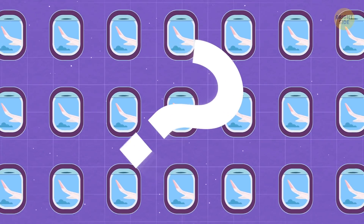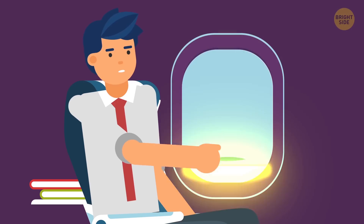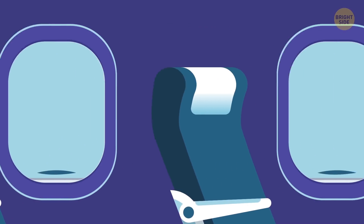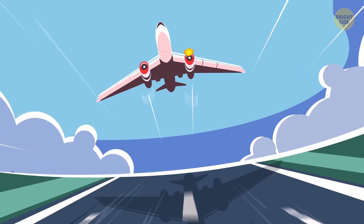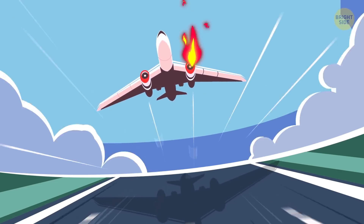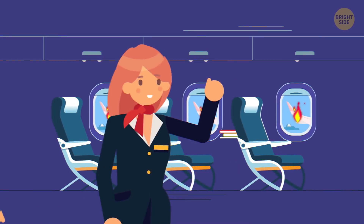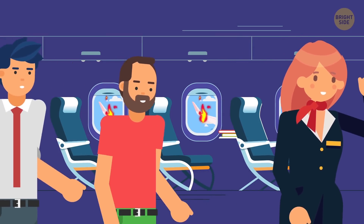But what about the shades? Why am I always told to keep my window shade up when the plane is taking off or landing? Well, turns out there are some serious safety reasons behind this too. When the shades are closed, flight attendants can't see what's happening outside. And since most accidents happen during takeoff and landing, it's critical that the cabin crew have a good view of what's going on outside the aircraft. Then, in case something goes terribly wrong, they can react fast and evacuate passengers.